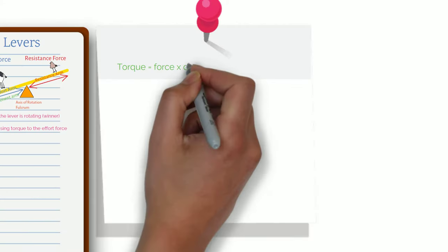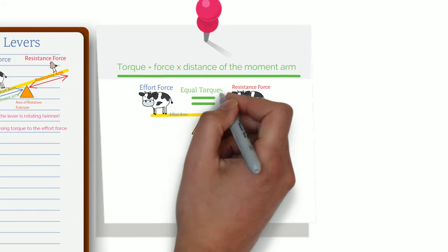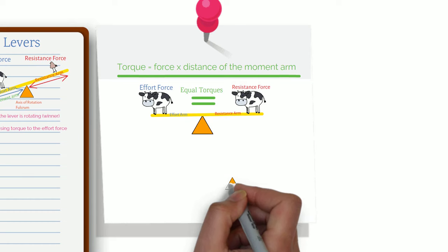Torque equals force multiplied by the length of its moment arm. If we have two equal forces and both moment arms are equal, the torques created will be equal as well. But if we have two equal forces but one of the moment arms is longer, the force with the longer moment arm will generate more torque.